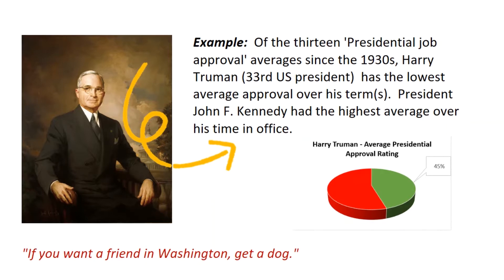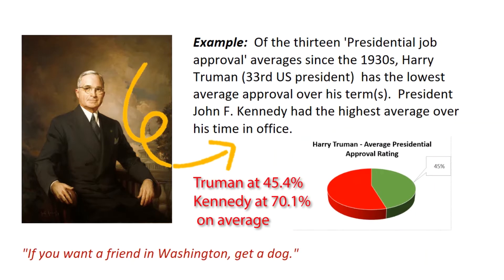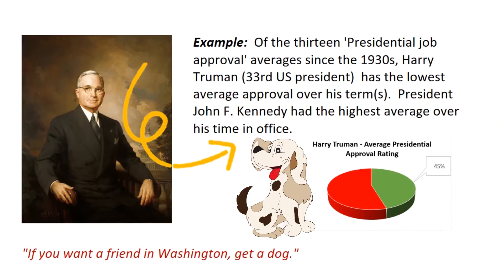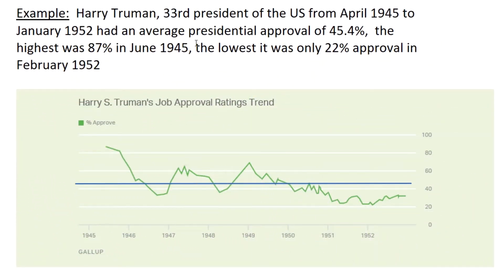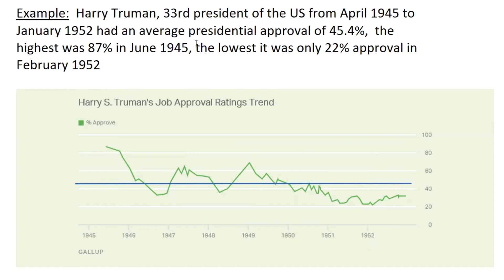There have been about 13 presidents since the late 1930s. It turns out Harry Truman, the 33rd US President, has the lowest average approval rating over his two terms — about 45.4%. President John F. Kennedy had the highest average over his time in office at 70.1%. There's quite a bit of drama hidden in that 45.4% average: Harry Truman was at a high of 87% in June 1945, but by the time he left office in February 1952, he had plummeted down to 22%, one of the lowest approval ratings of any president.